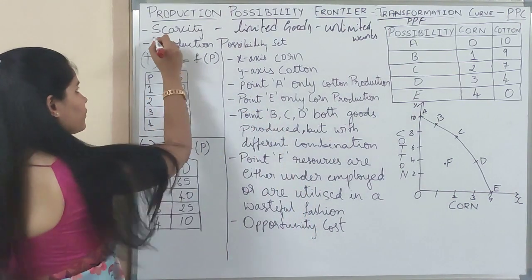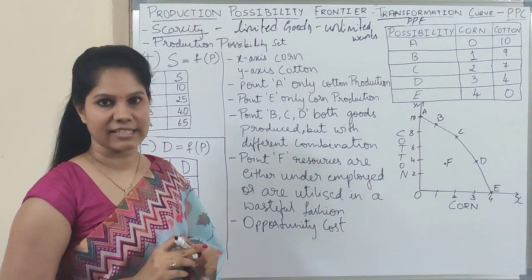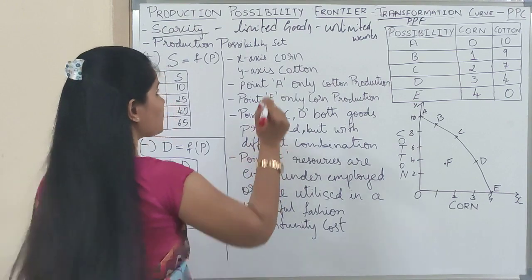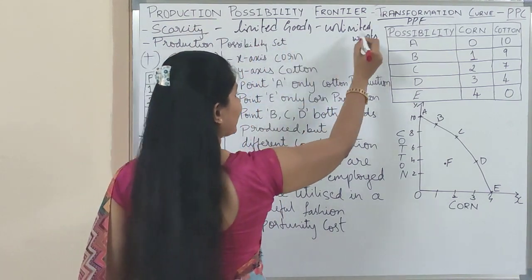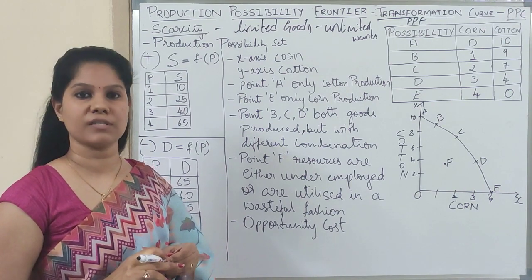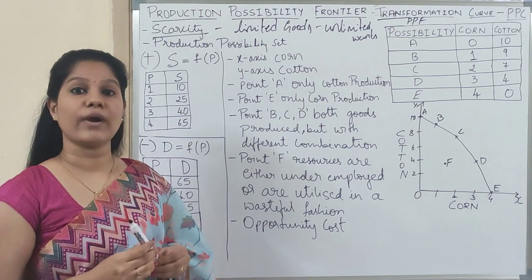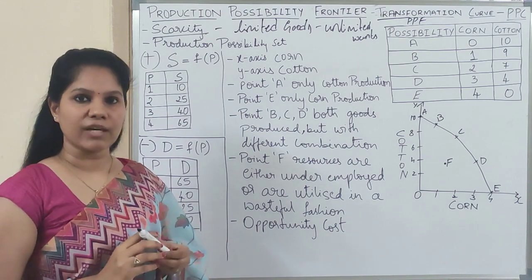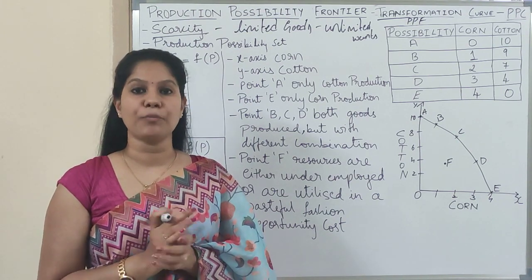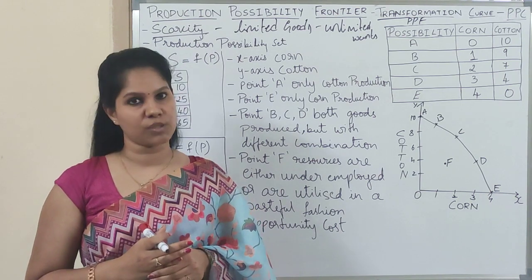The first topic we will talk about is the Scarcity Definition. Scarcity is Limited Goods and Unlimited Wants. In the last video I already explained what scarcity is. The human population numbers are so many, but the goods available in the economy are very much limited. So whatever goods we are going to produce, the resources we use should be in the proper way without wasting — we have to use them in the best possible manner.